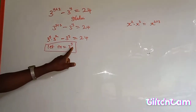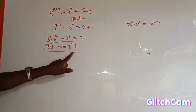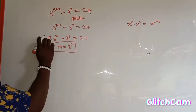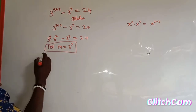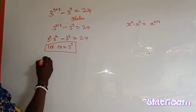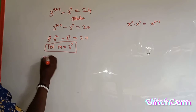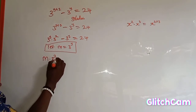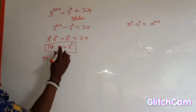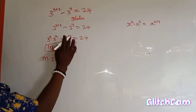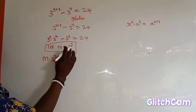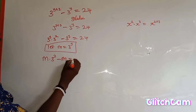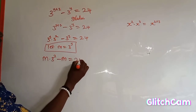Since we have 3 to the power of y appearing in both terms, we can let m represent 3 to the power of y. So wherever we see 3 to the power of y, we replace it with m. The first term becomes m multiplied by 3 to the power of 2, minus m, equal to 24.